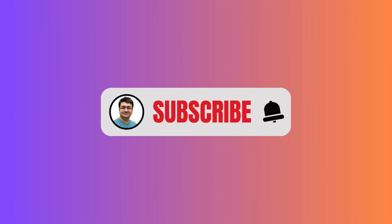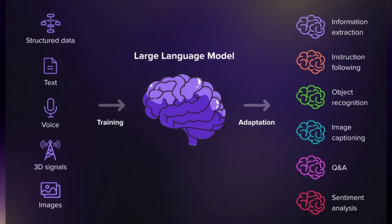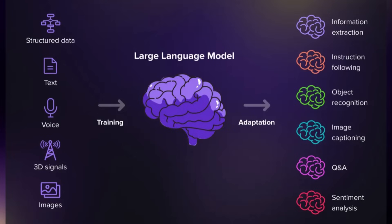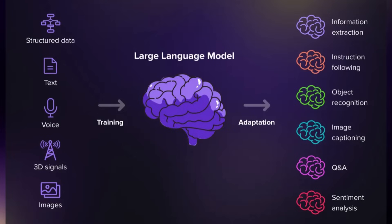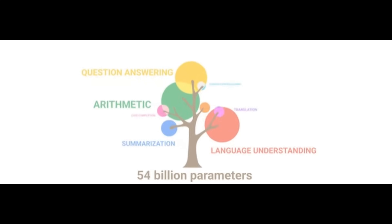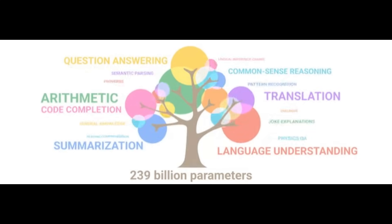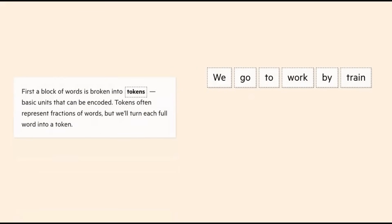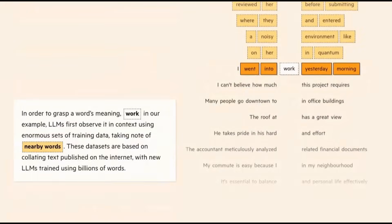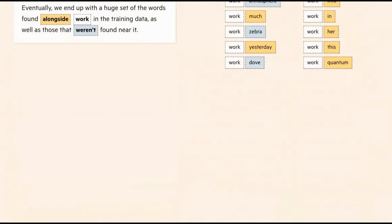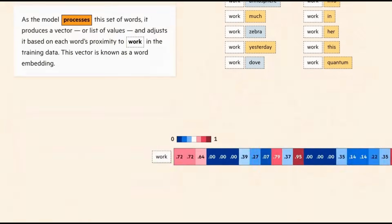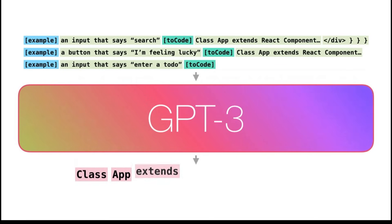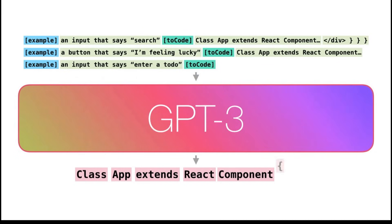If you are new to the channel, hit that subscribe button right away. LLM stands for Large Language Model. It's a type of AI trained on massive amounts of text to predict the next word in a sentence. Think of it like the autocomplete on your phone, but trained on the internet, books, articles, and code at a mind-blowing scale. The magic? It doesn't just spit out facts — it generates coherent, human-like language. But here's the catch: LLMs don't know things in real time. They rely on what they've been trained on, which is frozen at the time of training. If you ask it about a news article from five minutes ago, it won't know, unless we give it that info somehow.